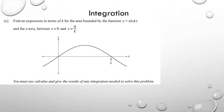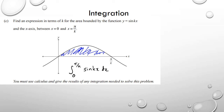Similar to a question in the excellence edition video on working with areas. They're asking for an expression in terms of k for the bounded area — basically the area under the curve. Written as an integral it's the integral from 0 to π/k of sin(kx) dx. So area equals the integral from 0 to π/k of sin(kx) dx.